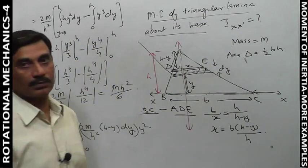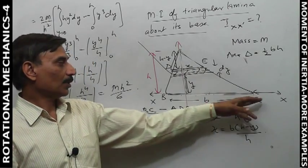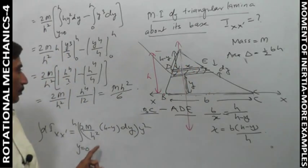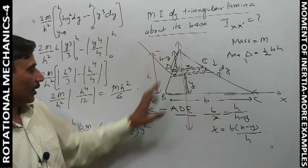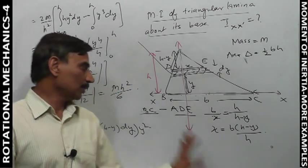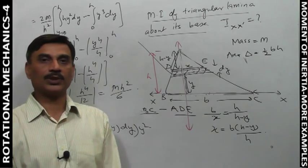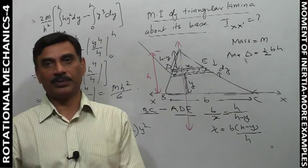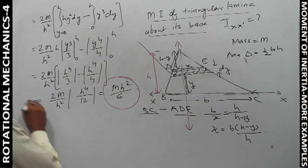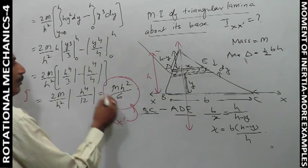This is a standard result which you need to remember. If you know triangular lamina's moment of inertia, you can easily find a square lamina's moment of inertia. I_xx dash = mh²/6.